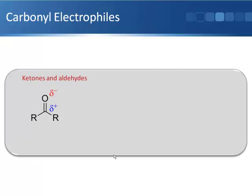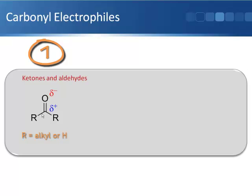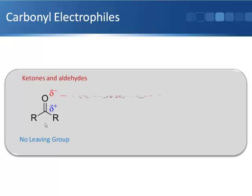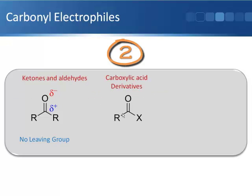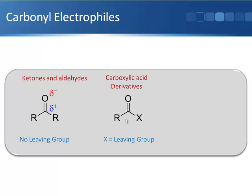The final important type of electrophile is carbonyl electrophiles, of which there are three important types. First, ketones and aldehydes, where R is either an alkyl group or a hydrogen — these carbonyl compounds have no leaving group attached to the carbonyl carbon, so they only undergo addition reactions. Second, and probably most important, are carboxylic acid derivatives, where a group X is attached that can actually be a good leaving group, making these capable of undergoing nucleophilic acyl substitution reactions.